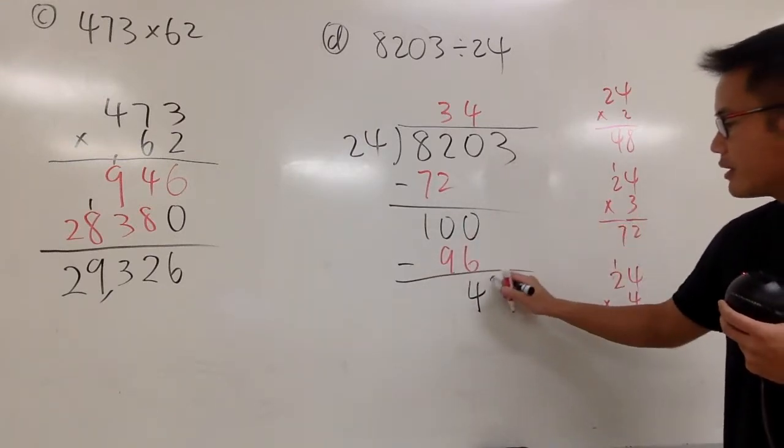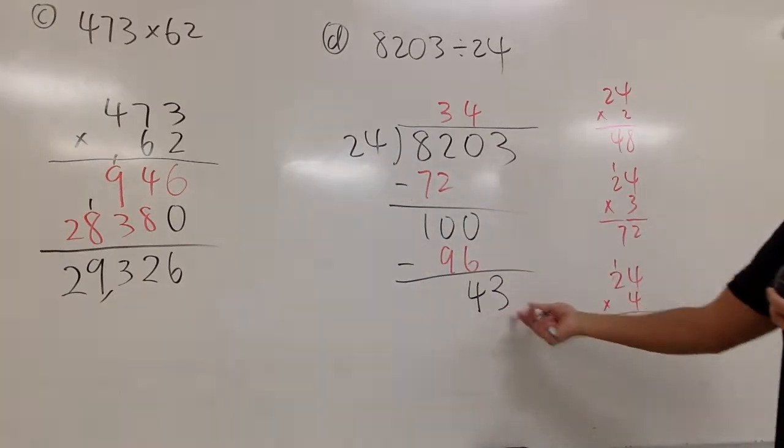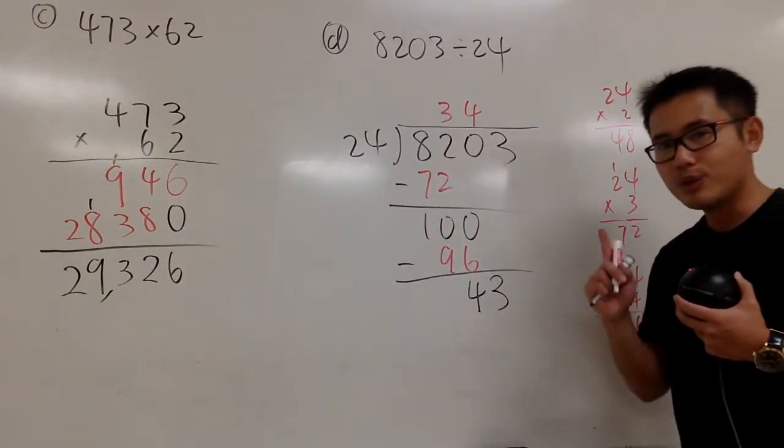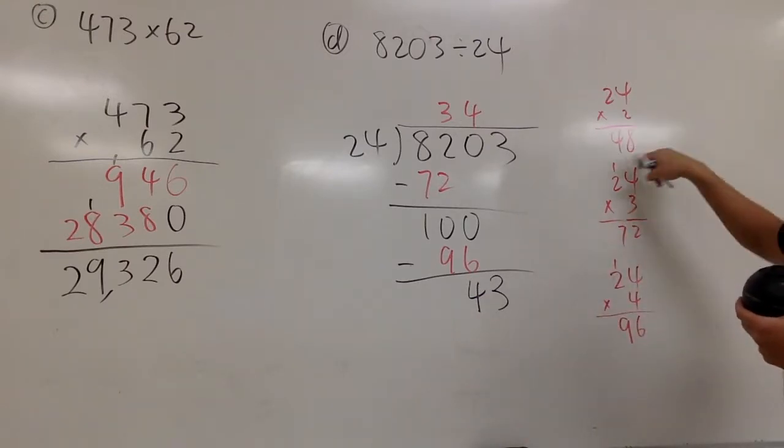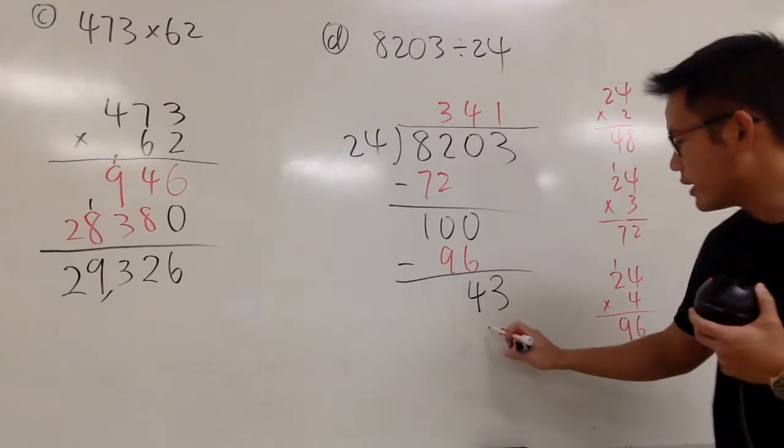And then we bring down the 3 right here. And now, 24 goes into 43 how many times? Only one time, because when you have 2 it's 48. So we'll just have one time. 1 times 24, we get 24.